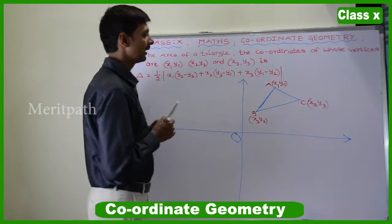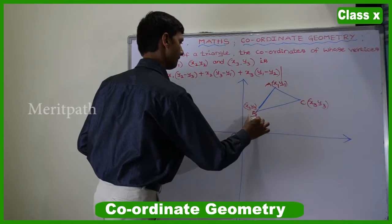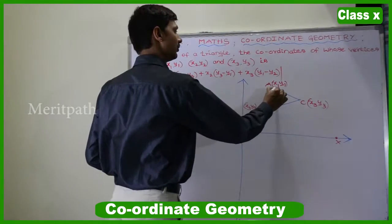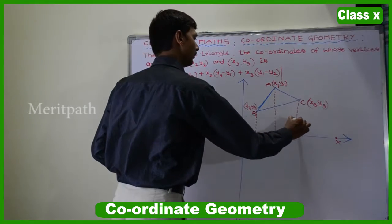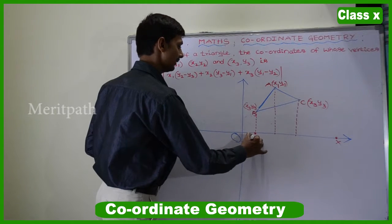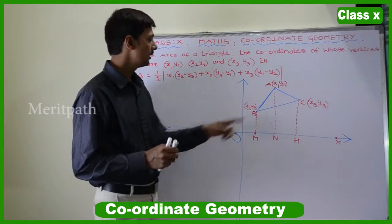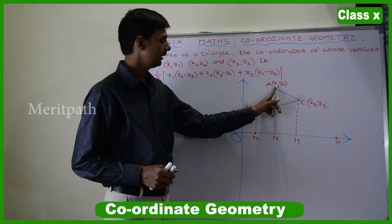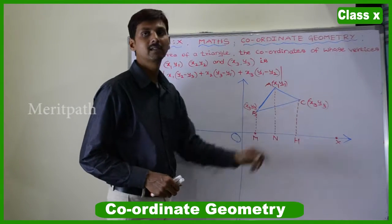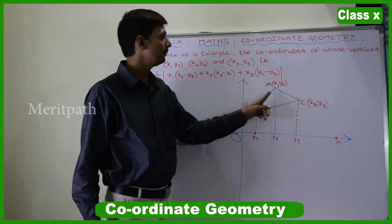We draw perpendicular lines from B, A, and C to the x-axis (Ox). These perpendicular lines meet Ox at points M, N, and H respectively. We can observe that trapeziums are formed: trapezium BMNA, trapezium AMHC, and trapezium BMHC. To find the area of triangle ABC, we add two trapeziums and subtract the third trapezium.